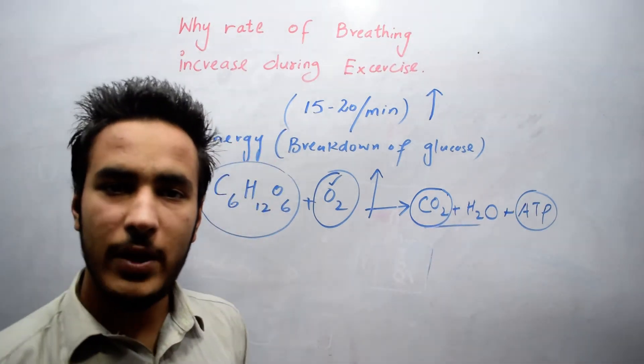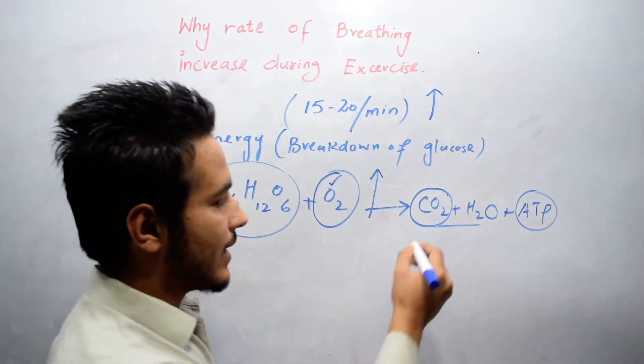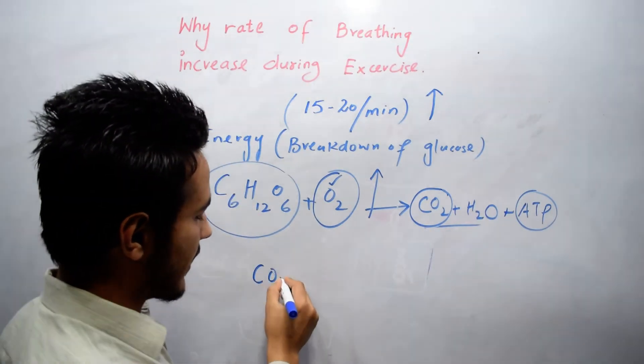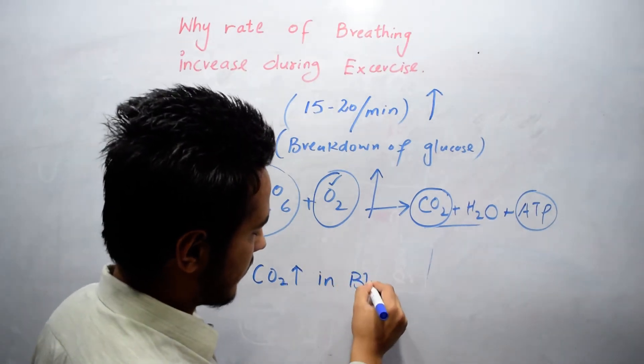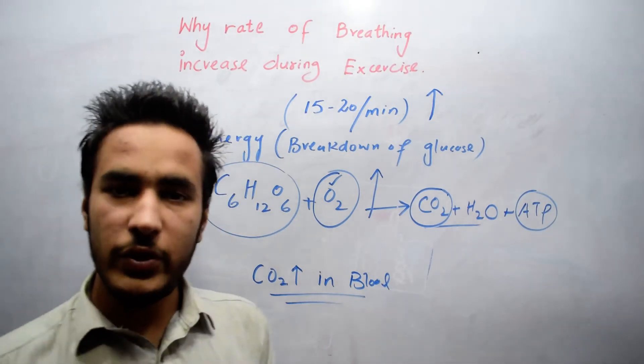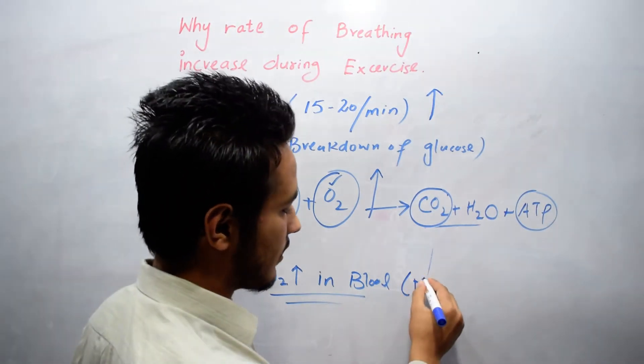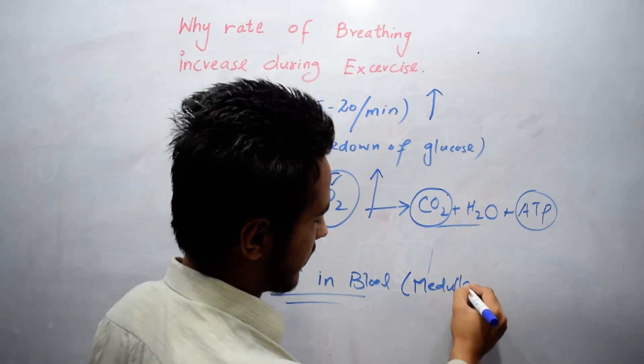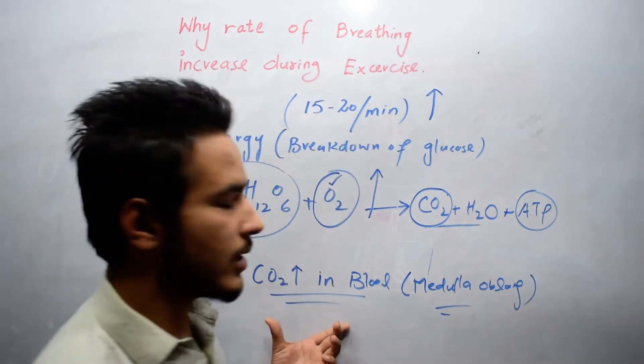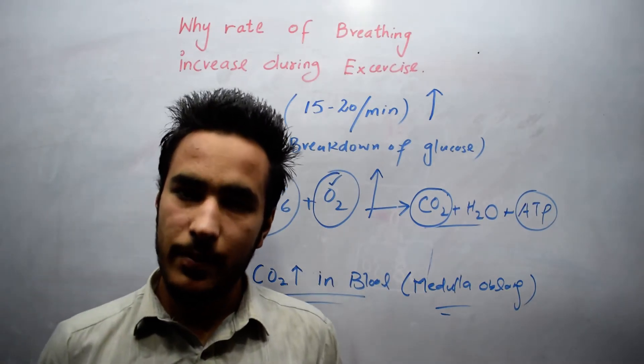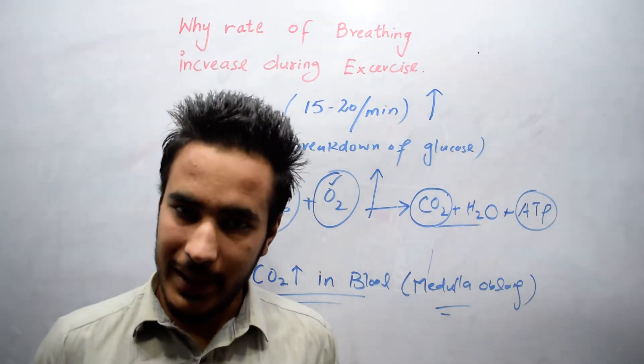So our blood will become deoxygenated and the carbon dioxide concentration will rise in the blood. As we know, breathing is controlled by the medulla oblongata. If there is more carbon dioxide in the blood,